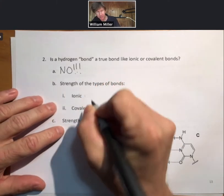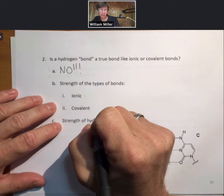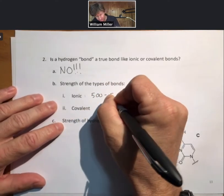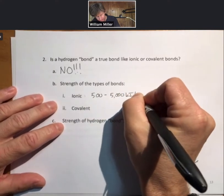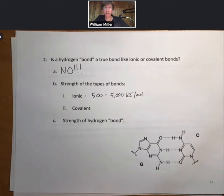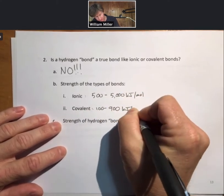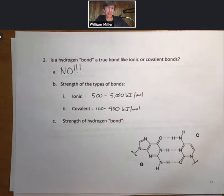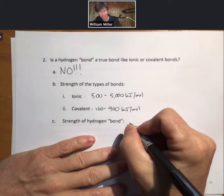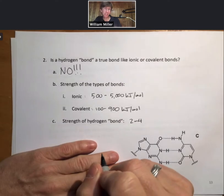Now let's look at the strength of the types of bonds we've talked about so far. Ionic bonds are typically between 500 to 5,000 kilojoules per mole as a minimum. Covalent bonds, on the other hand, are typically between 100 to 900 kilojoules per mole. One trend is that typically ionic bonds are stronger than covalent bonds, though be careful with that sometimes. Then the strength of a hydrogen bond, bond with air quotes around it, I would say is typically 2 to 4 kilojoules per mole.